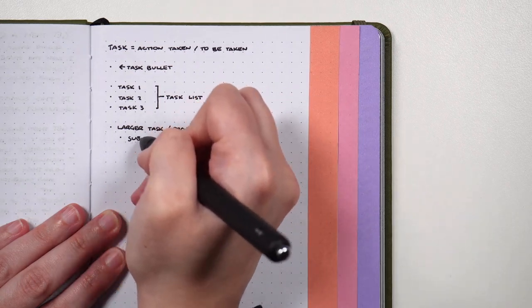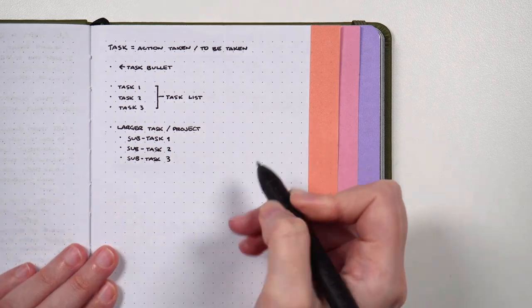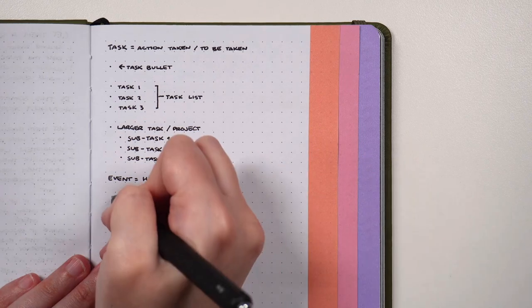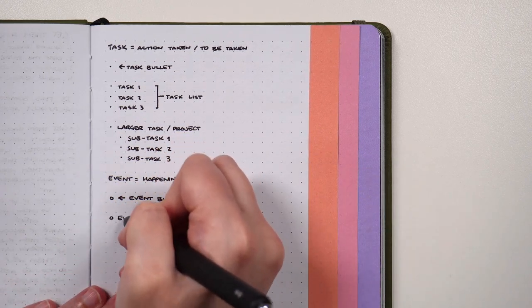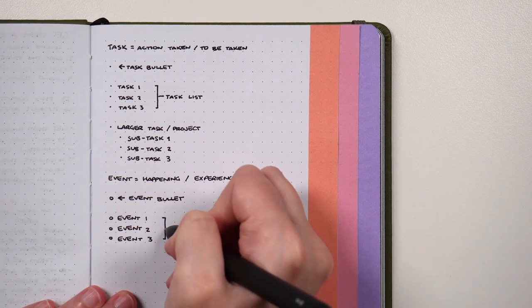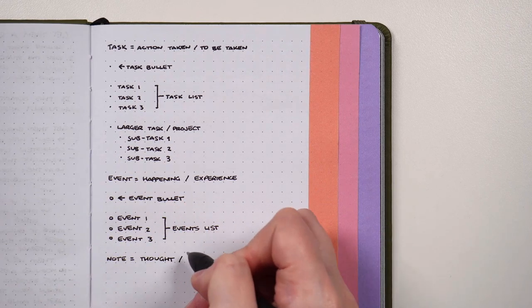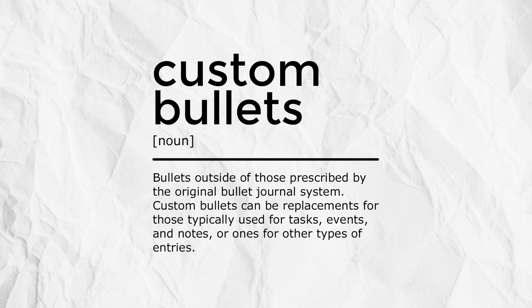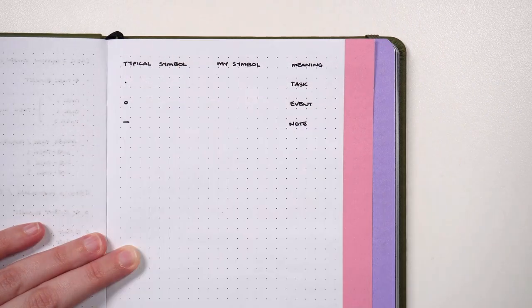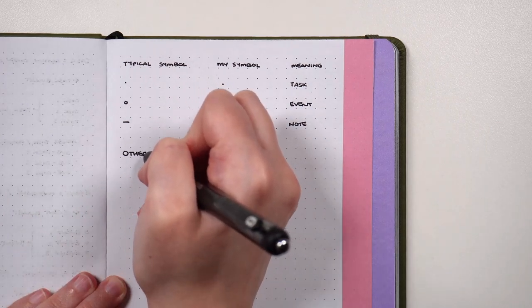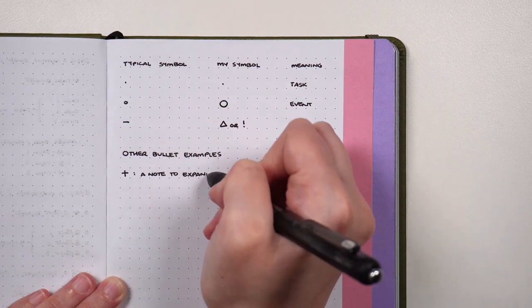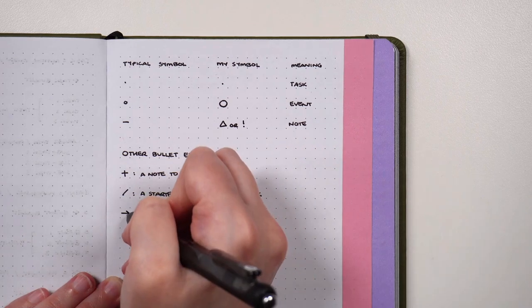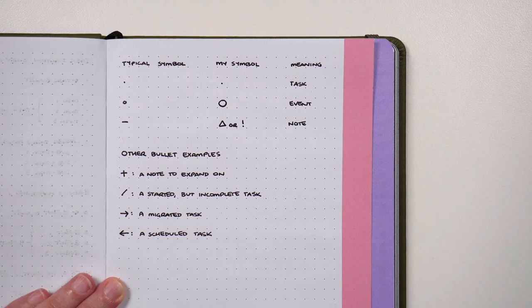An event is an entry representing an experience that either has happened or has yet to happen, represented in the original method using a small circle. A note is an entry representing additional information surrounding something — including thoughts, feelings, or supplementary information for a task or event entry. Custom bullets are bullets designed by you to represent different entries outside the standard task, event, and note bullets — for example, a mail icon for sending an email, a speech bubble for a conversation, or larger circles for events you can tick off. These are custom because they're outside the ones prescribed by the original bullet journal method.